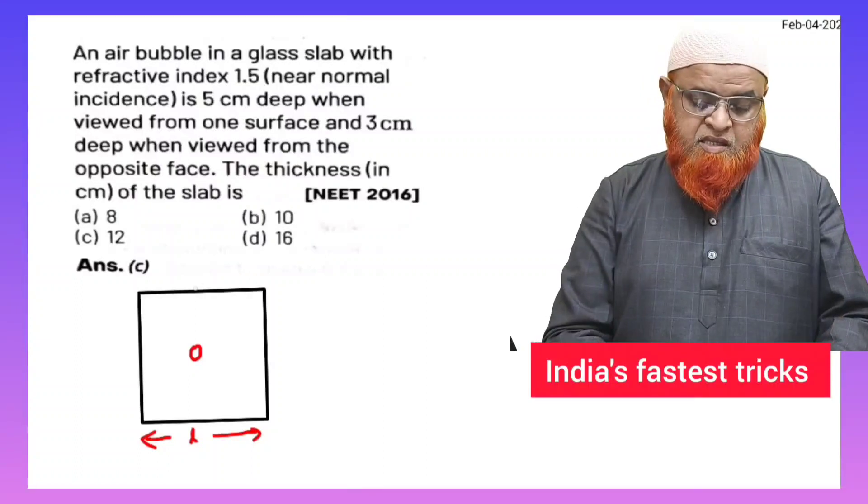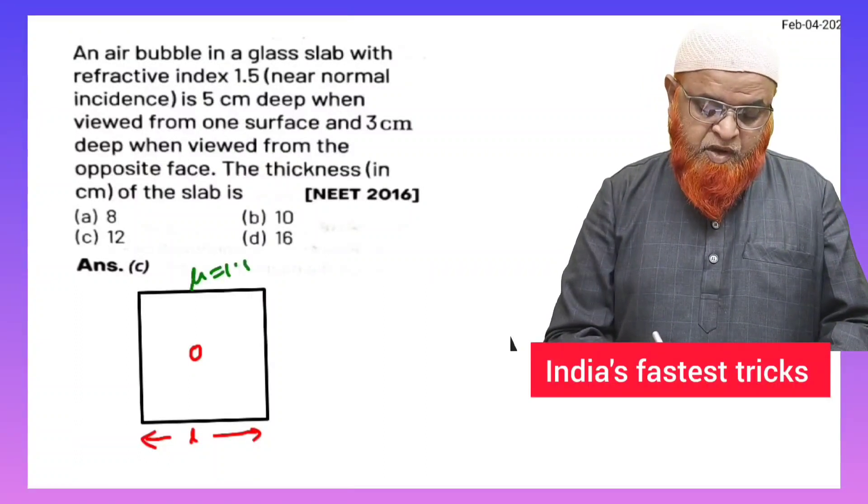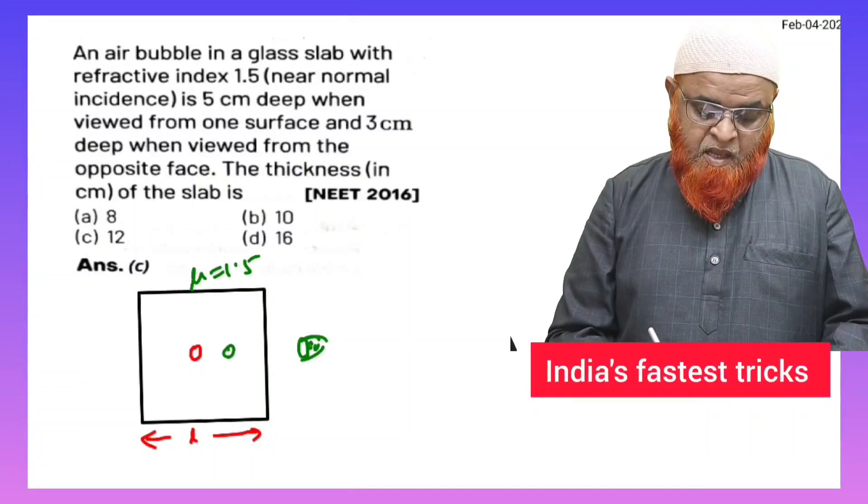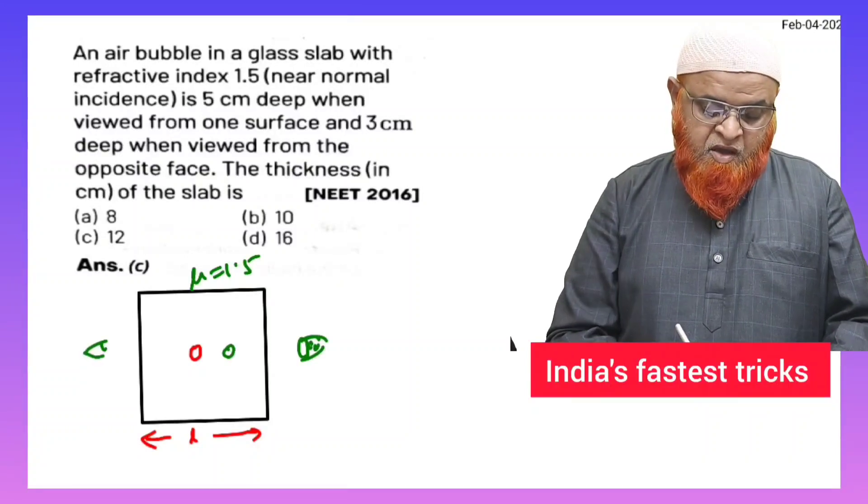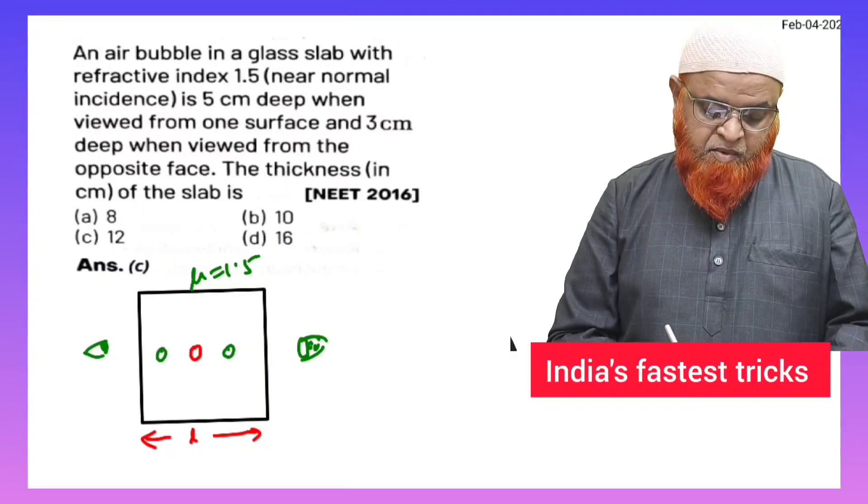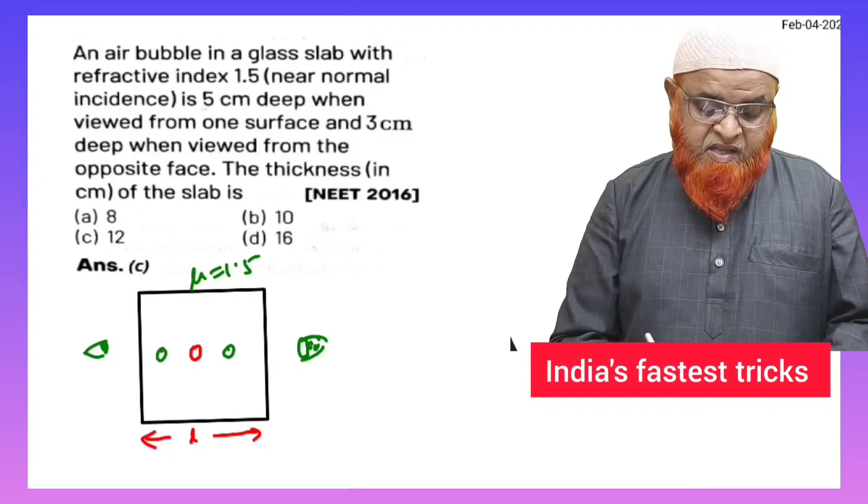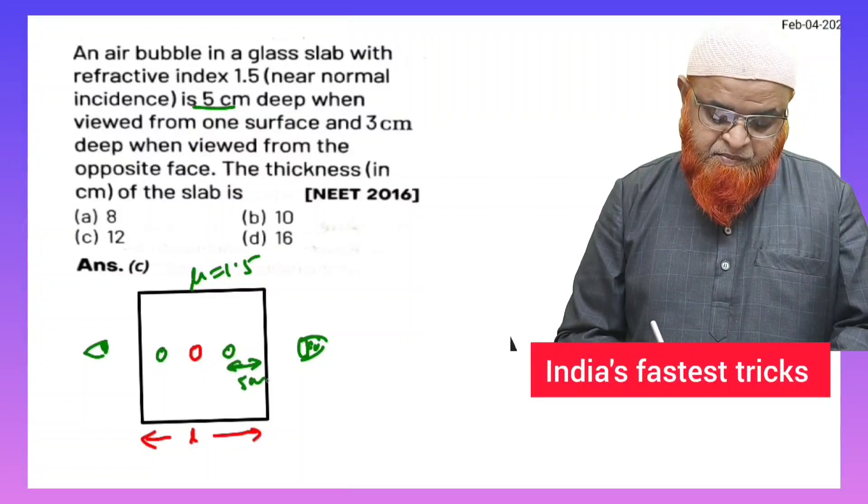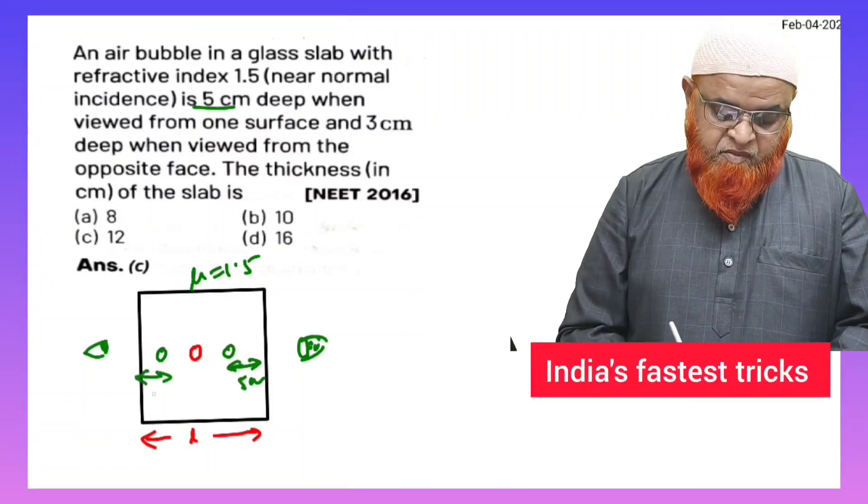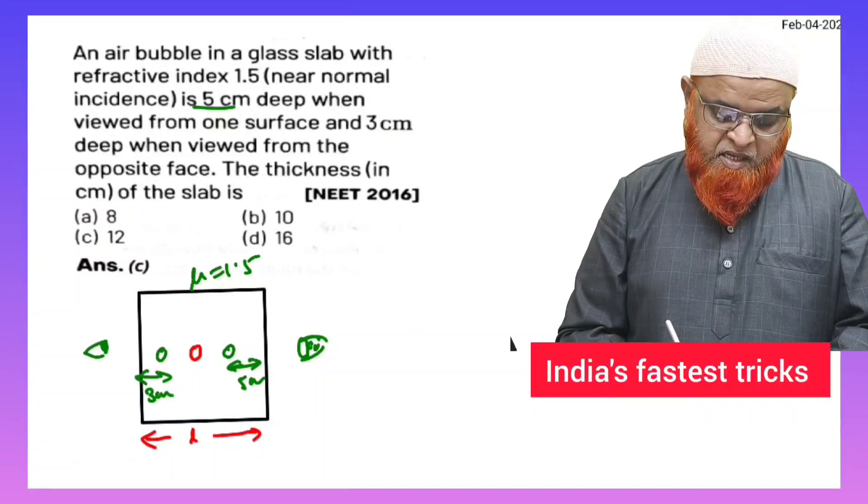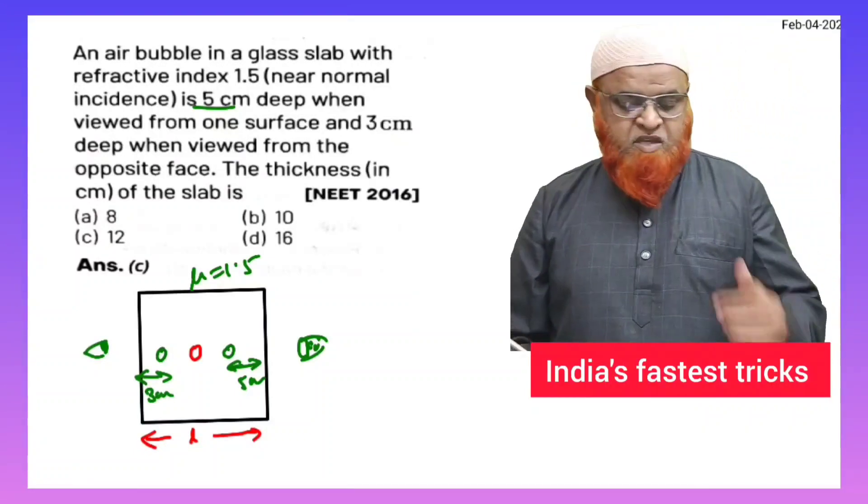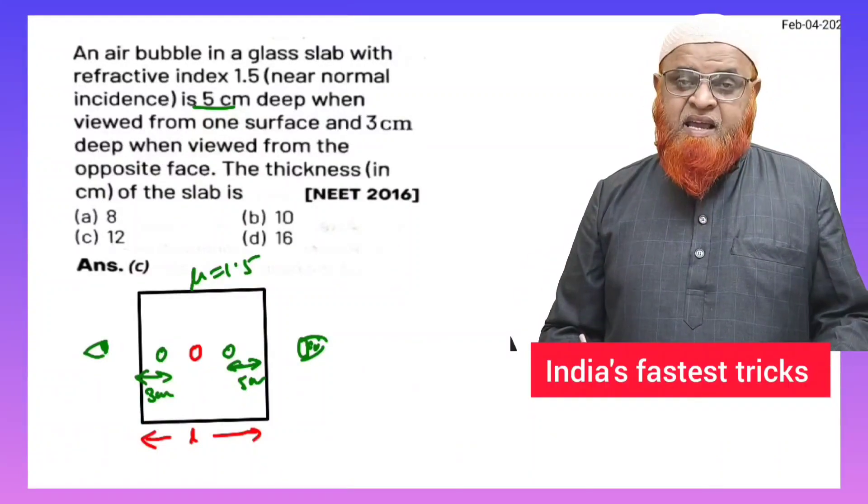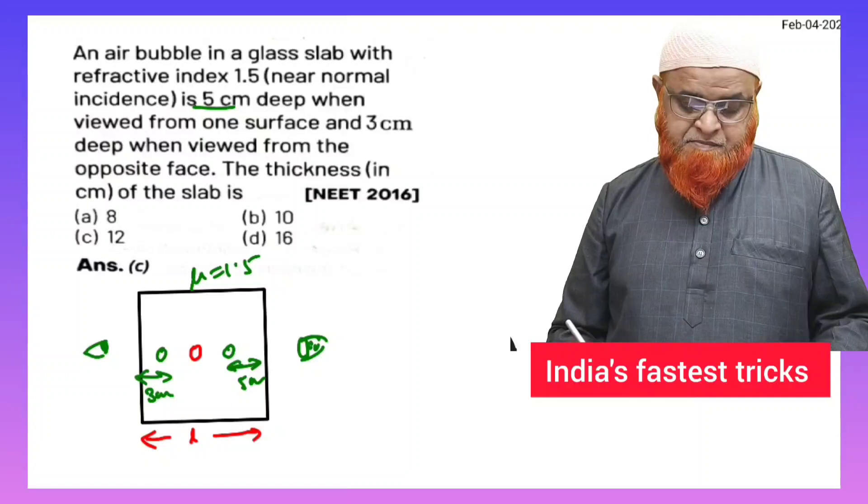So let us see here now. There is a glass slab having refractive index 1.5. From this side if a person is going to see, the bubble appears to be here. From this side if he sees, the bubble appears to be here. But it is said that bubble appears to be 5 centimeters from this side, and from this side bubble appears to be 3 centimeters. And he is asking us to find out what is the length.